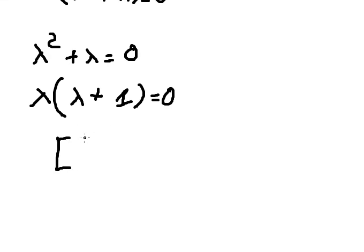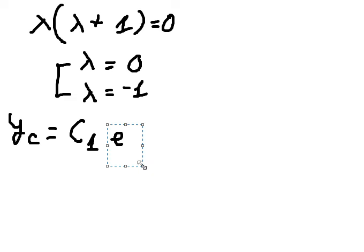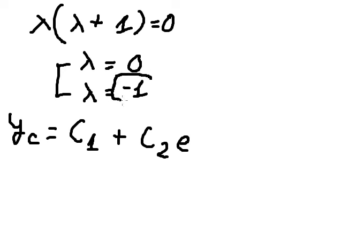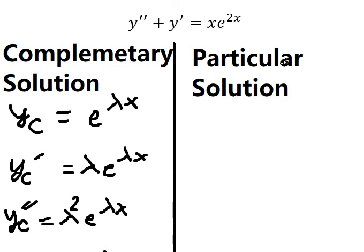We have two solutions: lambda equals zero, and lambda equals negative one. So yc equals c1 times e to the power of zero s, which is just c1, plus c2 times e to the power of negative s. This completes the complementary solution, and now we go to the particular solution.